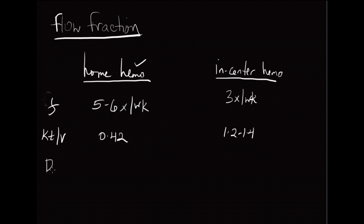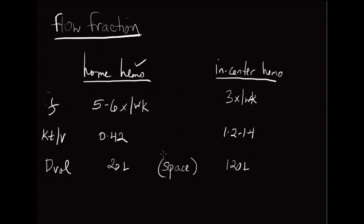Then we have dialysate volume, which is very different. The in-center hemo patient can be exposed to about 120 liters of volume per session, whereas the home hemo patient gets exposed to much less — about 20 liters. The main reason is space. The in-center patient is in a location where an essentially infinite amount of dialysate volume can be stored, so you can prescribe as much as needed to achieve the target KT/V. That's not the case for the home hemo patient, who is limited by their home.